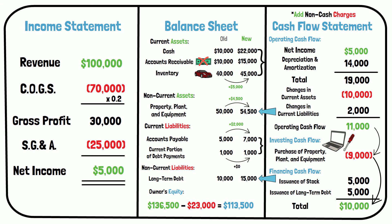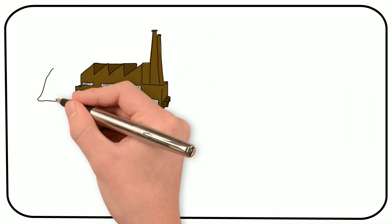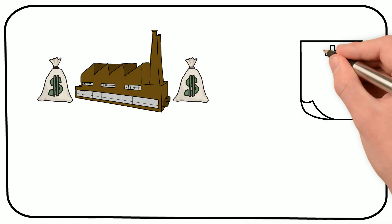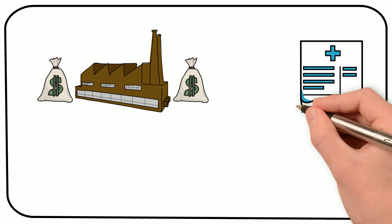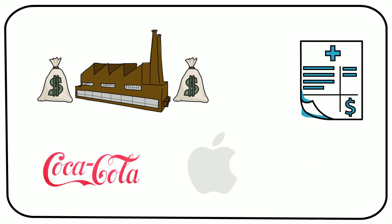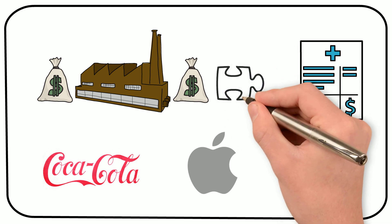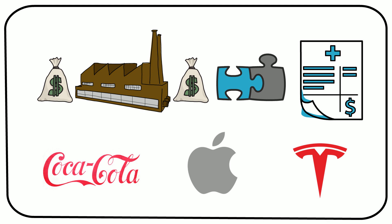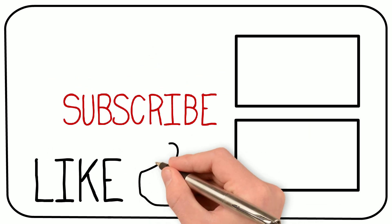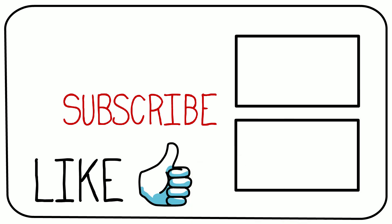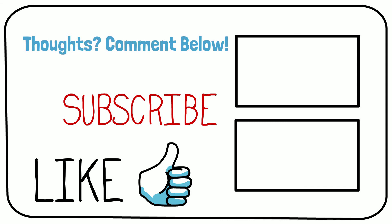This is the money that the stockholders of Tim's Cars should be entitled to if the business went bankrupt. As you can see, the three financial statements fit together to show how the money a business makes and raises connects to the assets and liabilities on the balance sheet. Obviously, businesses on the stock market are certainly more complicated than Tim's Cars, but every business's financial statements can be linked in the same way. I hope this was helpful. Please leave a like and subscribe if you enjoyed, and comment any thoughts you have down below.